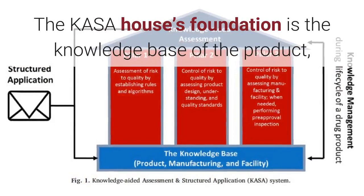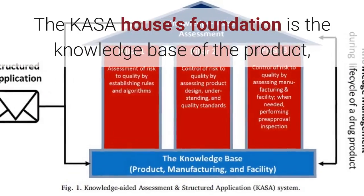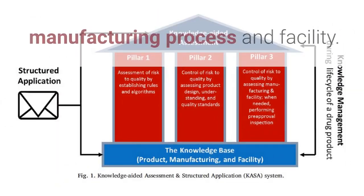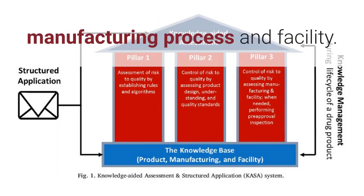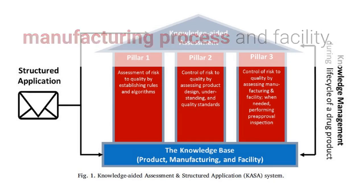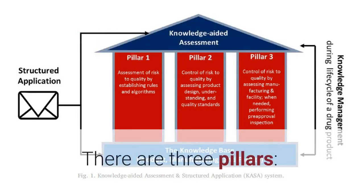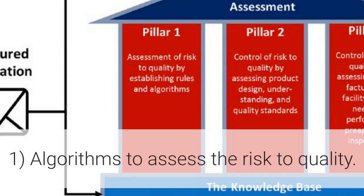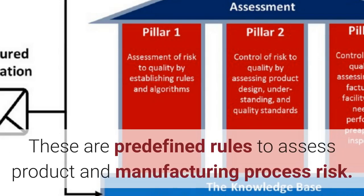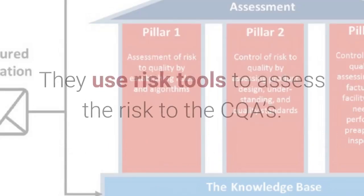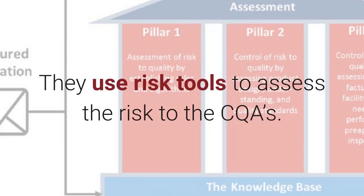The CASA foundation is the knowledge base of the product, manufacturing process, and facility. There are three pillars. The first pillar consists of algorithms to assess the risk to quality — predefined rules to assess product and manufacturing process risk, using risk tools to assess the risk to the CQAs.